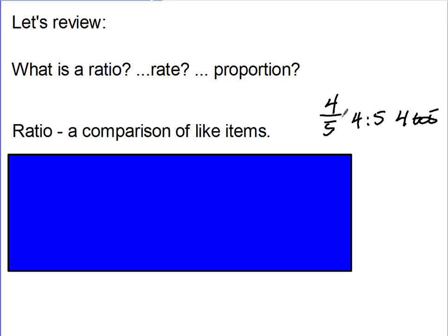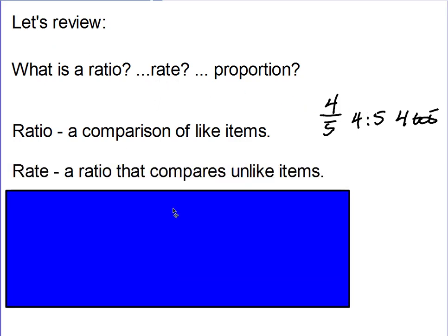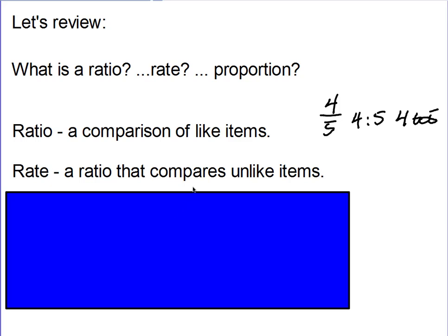And that would be the three ways that we would write a ratio. Well, a rate is a ratio, but it compares unlike items, such as 5 for a dollar. Gas is $2.15 per gallon. So you're comparing dollars and gallons. They are unlike items. And that is a rate.